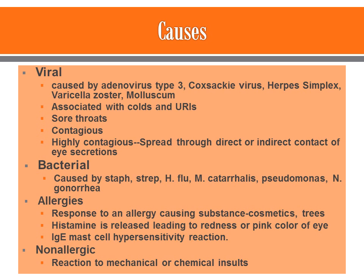With allergic conjunctivitis, the response is to some type of allergen — it could be cosmetics, pollen in the air, or animal dander. A histamine is released leading to the redness or pink color of the eye, and it's usually an IgE mast cell hypersensitivity reaction. The patient may not even realize they have an allergy until they begin to get these symptoms. With non-allergic conjunctivitis, which is rare, it's usually a reaction to a mechanical or chemical substance the patient has been exposed to.